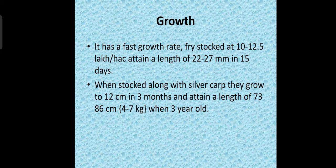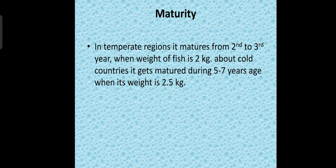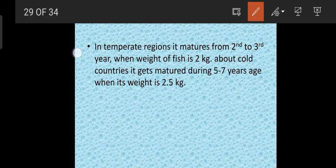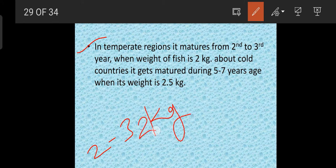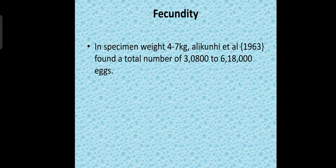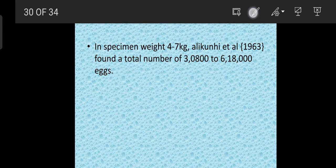Regarding maturity: in temperate regions it matures from the 2nd to 3rd year, meaning 2 to 3 years of age, when the weight of the fish is about 2 kg. In cold countries it gets matured during 5 to 7 years when its weight is about 2.5 kg.